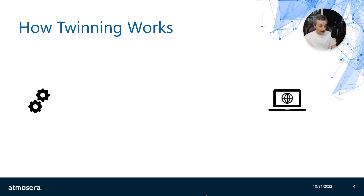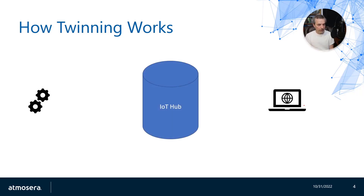Twinning is going to solve this problem with some trade-offs. I have the same basic components: a device with configuration and state data, and a client that's interested in querying that data. But in the middle, I have something that brokers that exchange, which is IoT Hub. The IoT Hub stores a copy of the data from the device — which is why it's called a twin — and this allows the client to query that data fleet-wide without having to go to every single device.